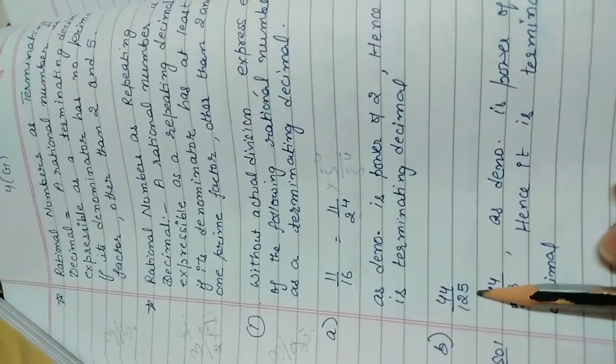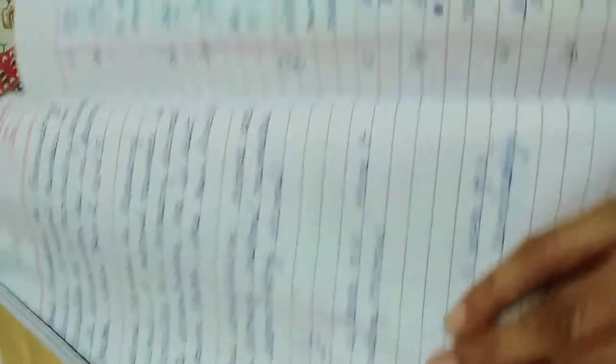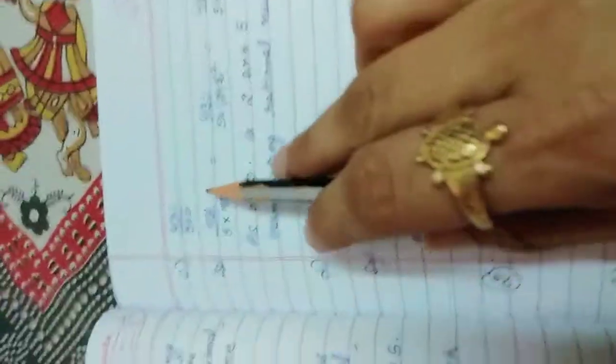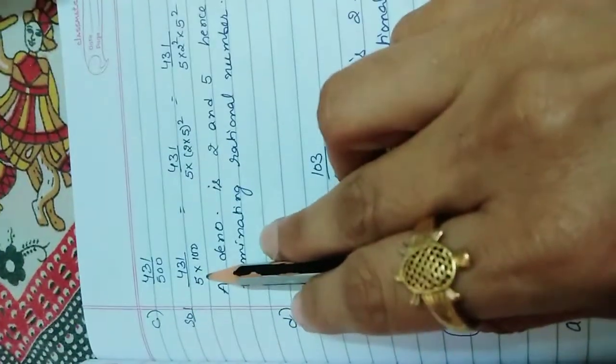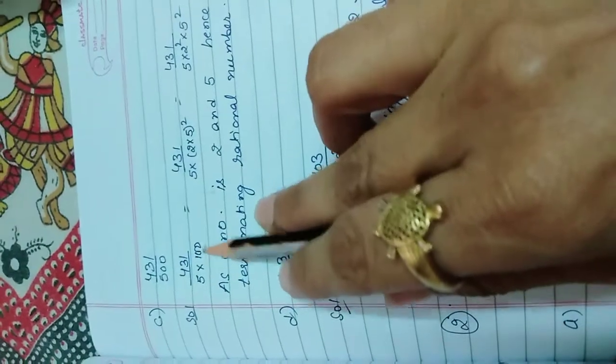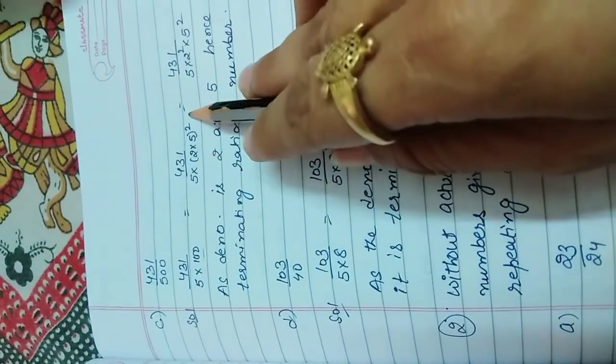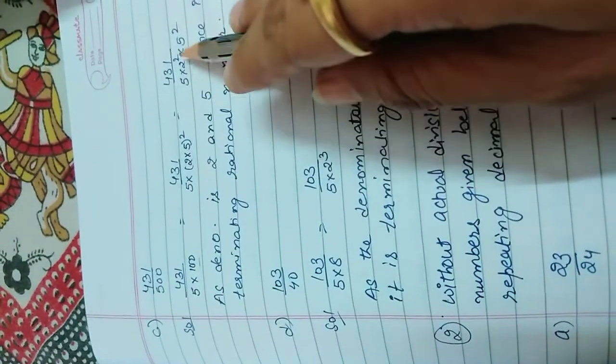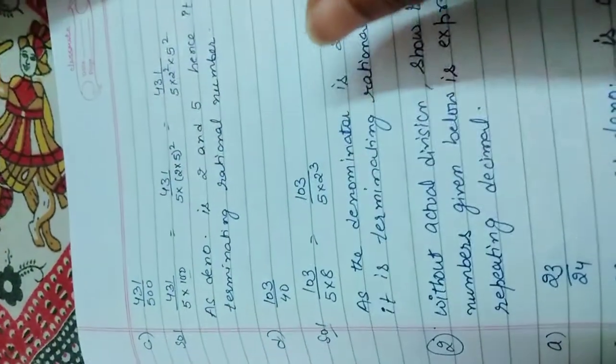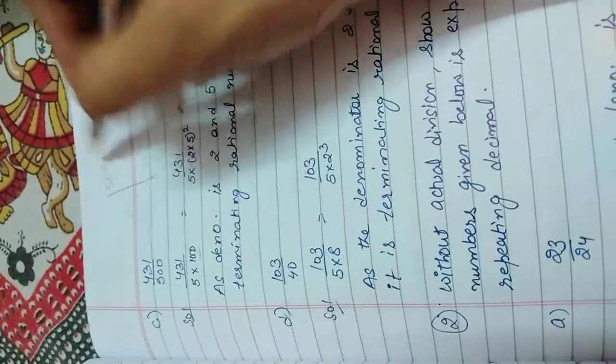Here 125 is a factor of 5, that is why it is terminating. Here 500 can be written as 5 into 100. 100 can be written as 5 to 5 is 10, 10 raise power of 2. It means it is 5 to 5, all are factor of 5.